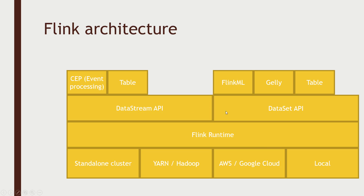Something else that's a little different about Flink: not only can it process streaming data, but it can also process batch data. It has two different APIs. The DataStream API, on which you can do event processing using something called CEP, as well as table-based processing where you can issue SQL-like relational queries on incoming data. There's also a DataSet API for dealing with bounded batch data, so Flink can handle both unbounded streaming data and bounded batch data.